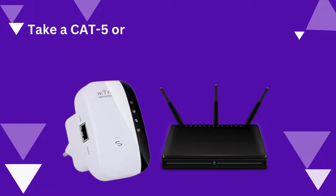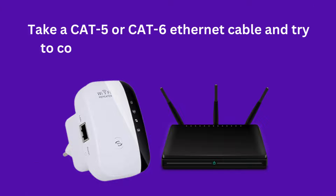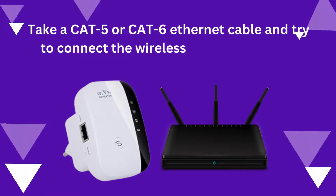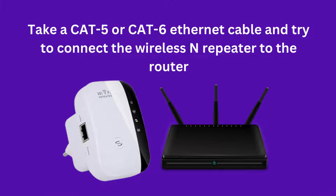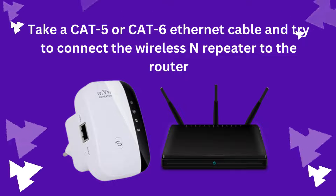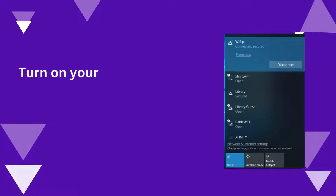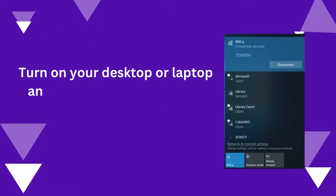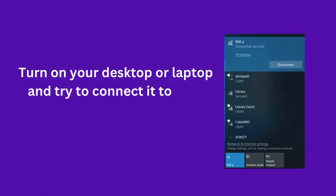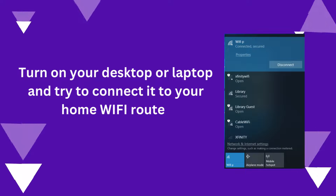Take a CAT5 or CAT6 Ethernet cable and try to connect the wireless N repeater to the router. Then turn on your desktop or laptop and try to connect it to your home Wi-Fi router.